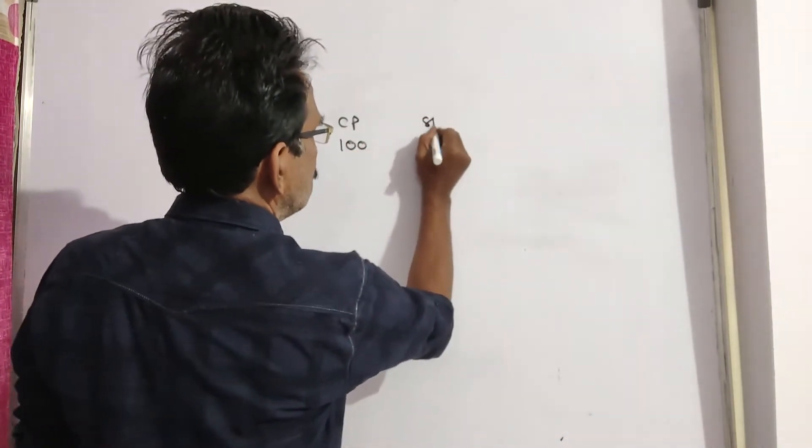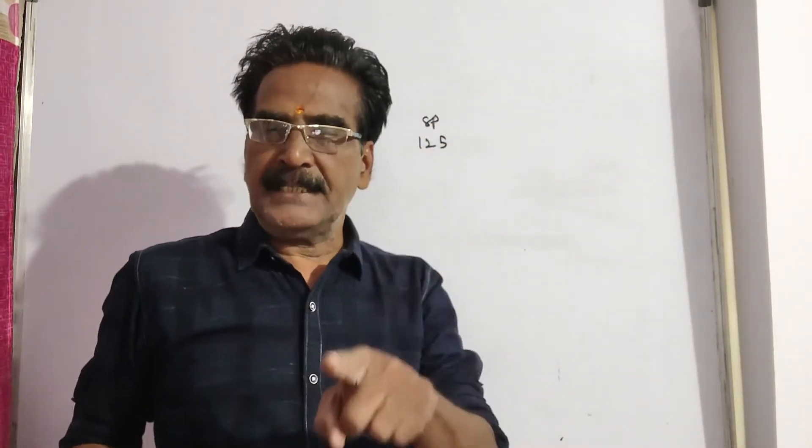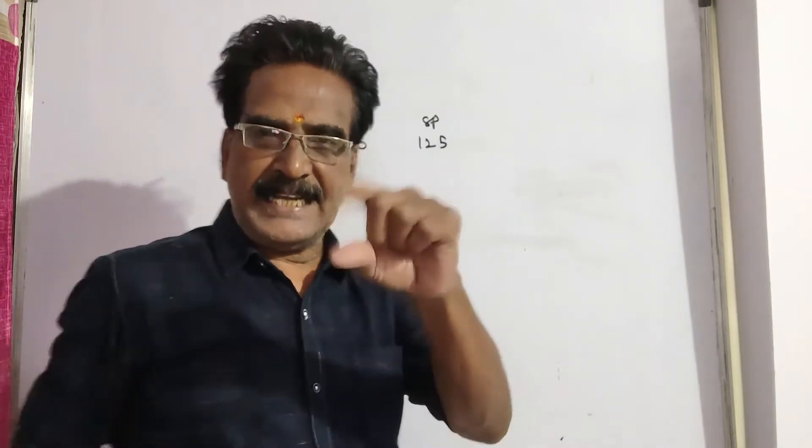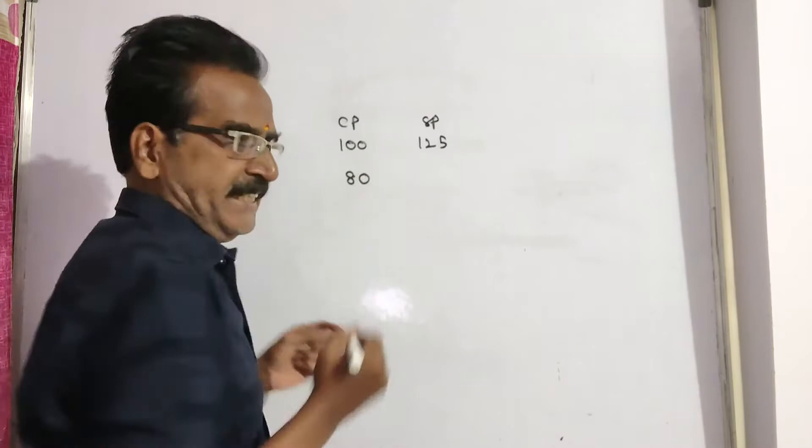then sold price will be 125. If he had bought it at 20% less, that means the new cost price is 80,